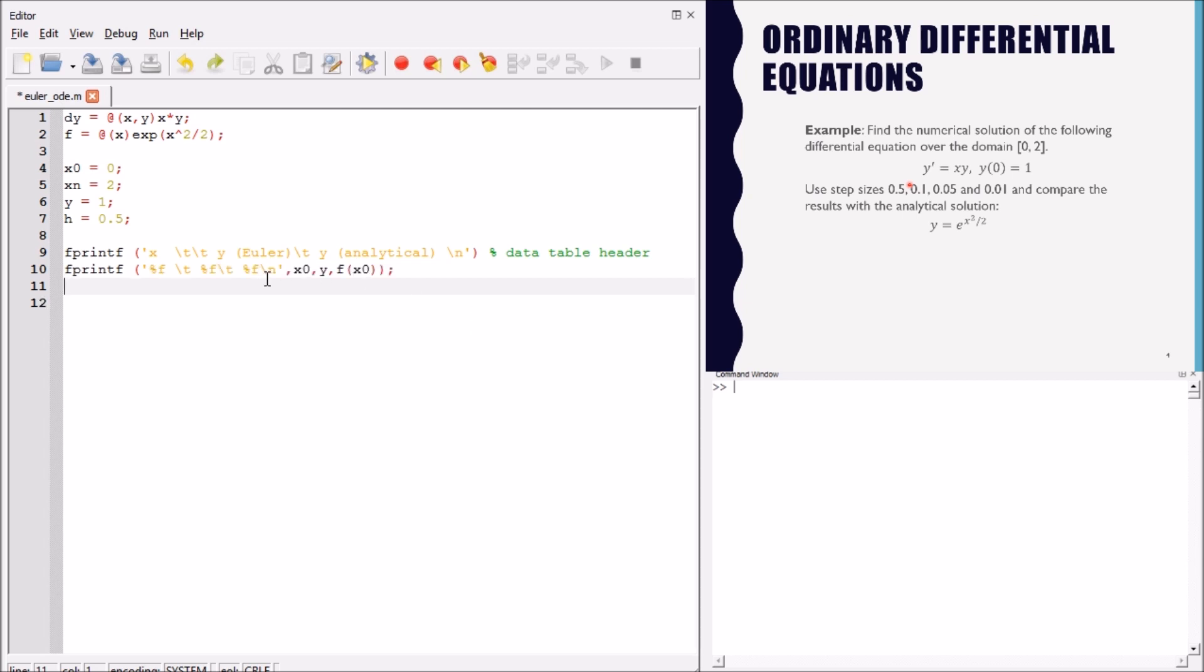We define the first row of the table, because we know the initial value of the domain, the initial start point of the domain. We have the initial value of y, and we can compute the value of the solution function at the start of the domain.